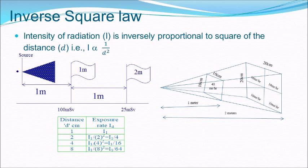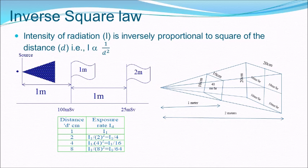Before discussing the factors required for absorbed dose calculation, I would like to talk about inverse square law. Inverse square law states that the intensity of radiation I is inversely proportional to the square of the distance D — that is, I is proportional to 1/D². For example, at 1 meter distance, dose is approximately 100 millisievert; at 2 meters, it reduces to 25 millisievert — that is, by 1/4.